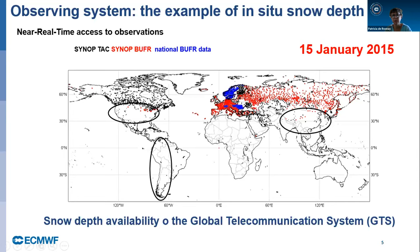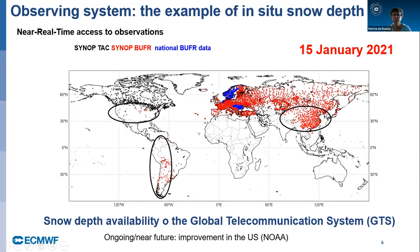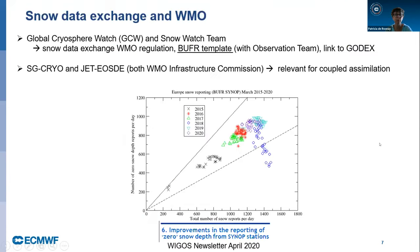Six years later, at the beginning of this year, we can see areas with huge improvement, like in China and South America. There are ongoing improvements potentially for the future in the US, as NOAA is working on the BUFR conversion to make thousands of in-situ snow depth observations available on the GTS from the US. All these improvements required a lot of work from WMO in particular. In collaboration with WMO, we developed a new BUFR template so that WMO member states can more easily report their in-situ snow depths on the GTS.